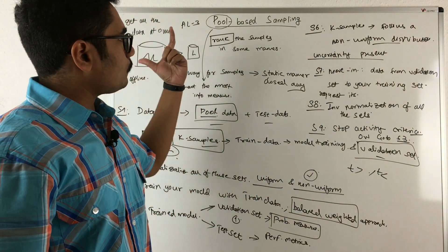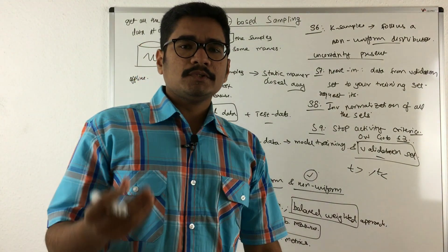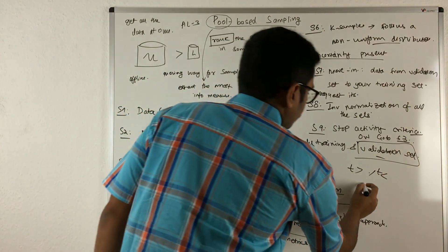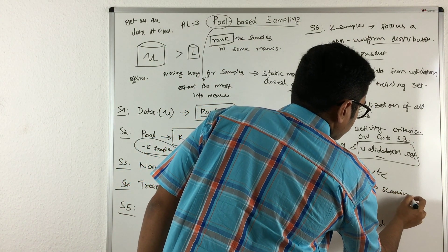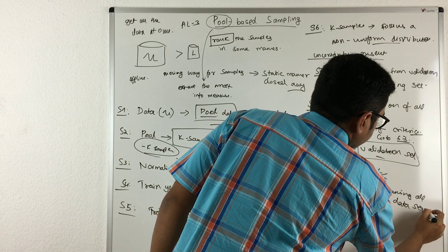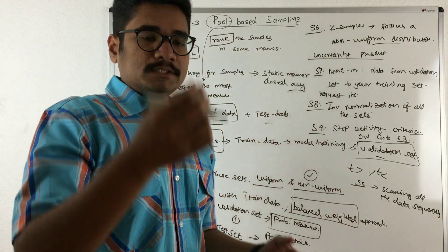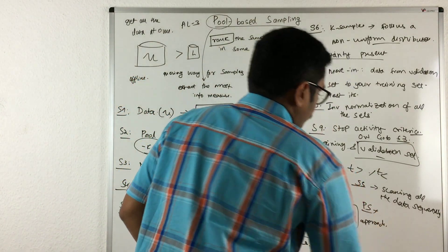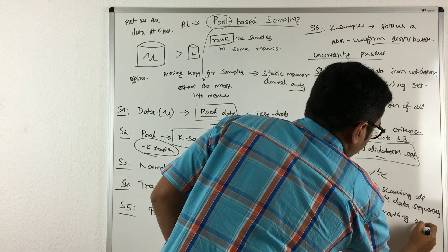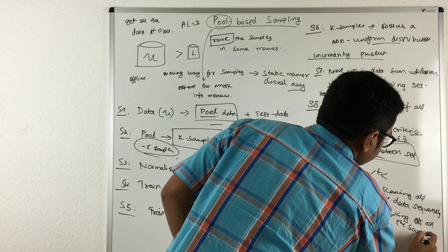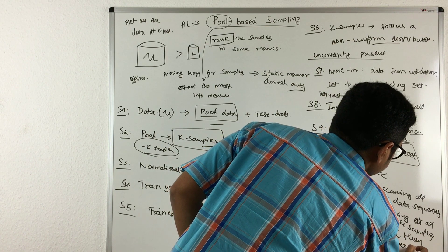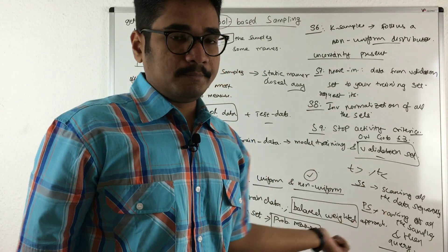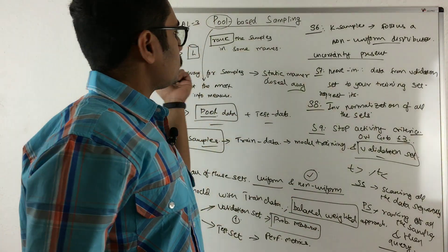That was an overview of pool-based sampling. One main difference that distinguishes pool-based from stream-based selective sampling is that in selective sampling, we scanned all data sequentially — whenever one data point came, we checked it and assigned it to the Oracle for labeling. In pool-based sampling, we instead do a ranking of all the samples and then query. This is basically why we prefer pool-based sampling over stream-based selective sampling.